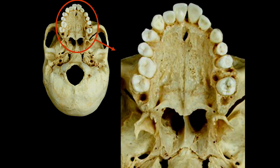Now we're looking through the nose from behind. All of this is going to be vomer. These structures are the lateral and medial pterygoid processes.